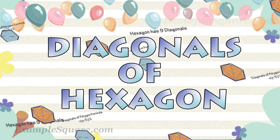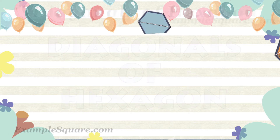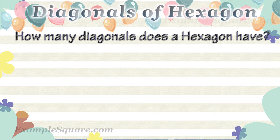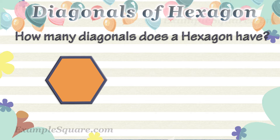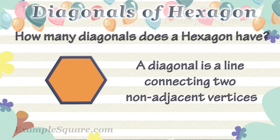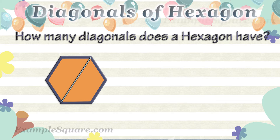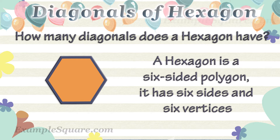Diagonals of a hexagon. How many diagonals does a hexagon have? A diagonal is a line connecting two non-adjacent vertices. A hexagon is a six-sided polygon — it has six sides and six vertices.